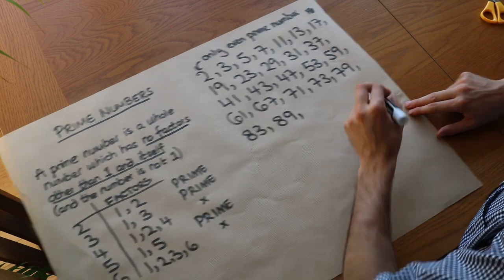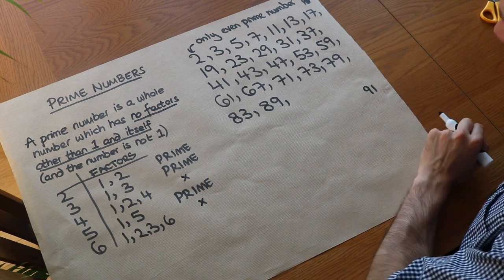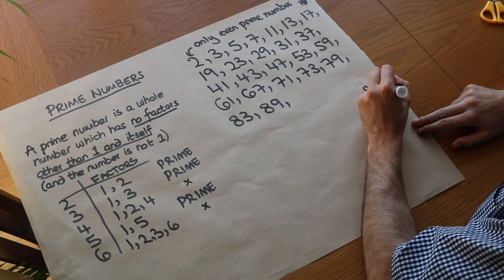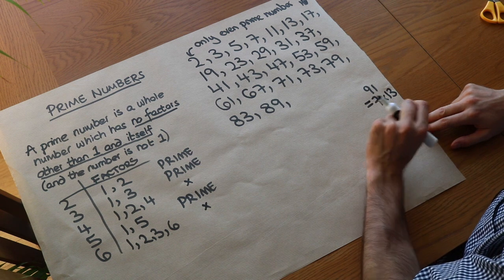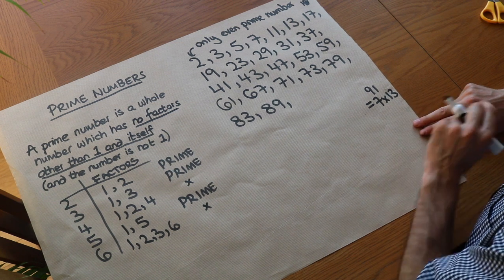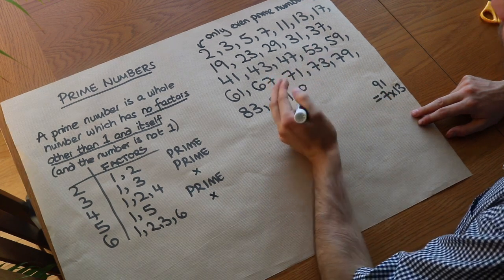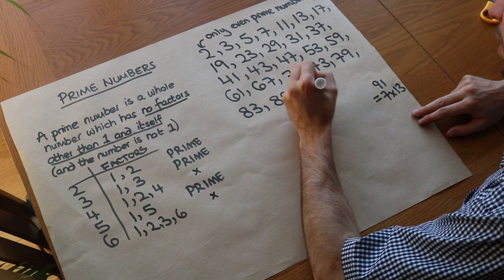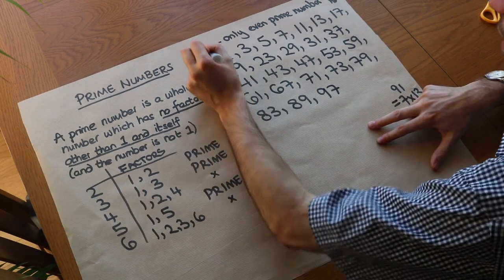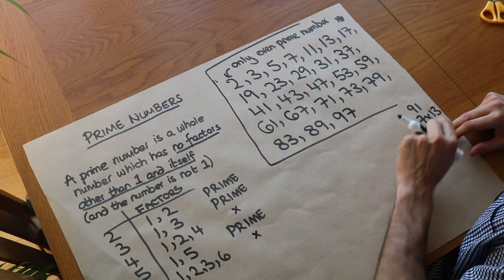Ninety-one is a really hard one. The digits add up to 10, not a multiple of three, and it doesn't end in five or zero — but it does divide by seven: 91 is seven times 13. Ninety-one is a classic example of a number people often think is prime, but it's not because it has these higher prime factors. Ninety-three divides by three — not prime. Ninety-five ends with a five — not prime. Ninety-seven is prime. Ninety-nine divides by nine and eleven — not prime. This is the complete list of primes up to 100, and I highly encourage you to be able to spot these.